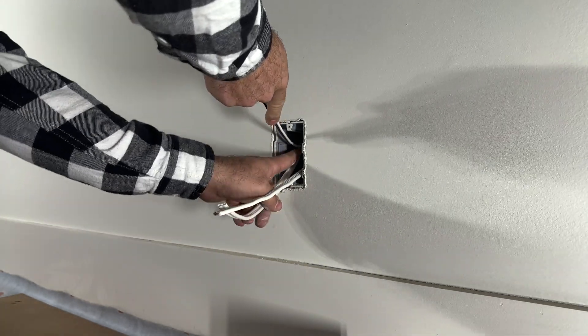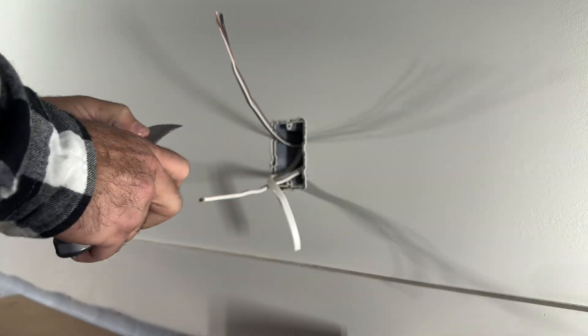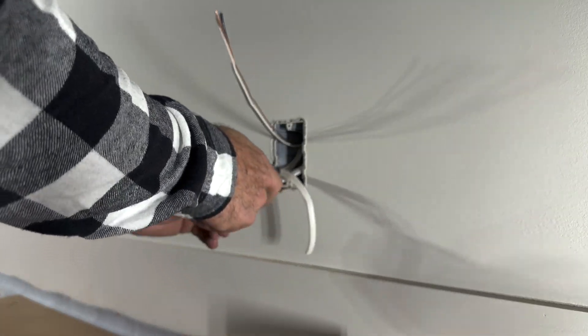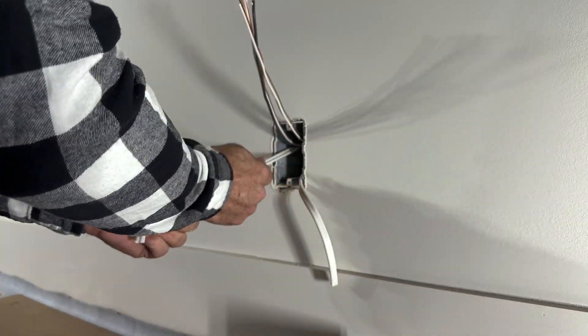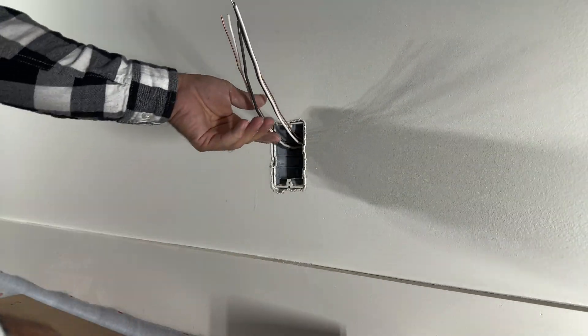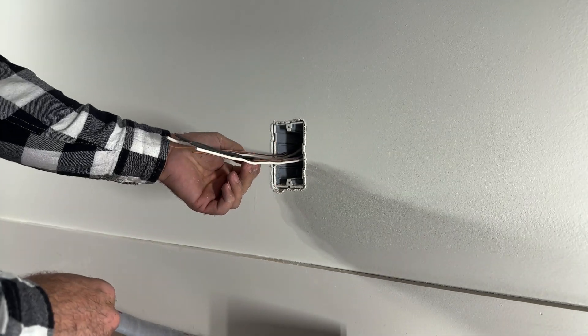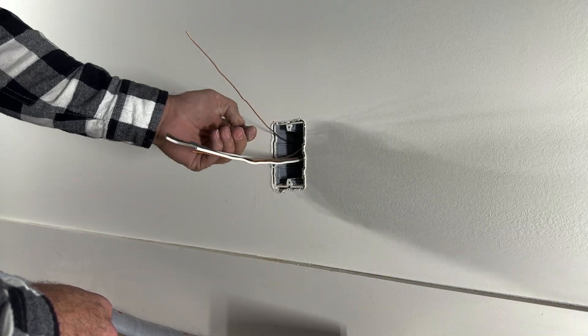We will expose the conductors, cut out the Romex, and here we are. So we have two ground wires, two neutral wires, and two power wires.